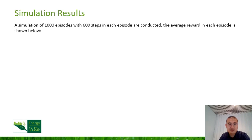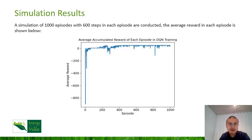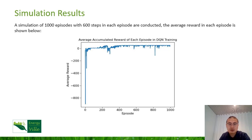A simulation of 1000 episodes with 600 steps in each episode is conducted. The average reward in each episode is shown here. As you can see, the average reward during the training process is increasing. At the beginning, the average reward is negative due to the penalty factor. After training, the agent learns how to avoid the penalty and reach the state that has the maximum reward. Because randomly sampled data are introduced to train, and the negative reward value is relatively large because of the penalty, the curve is not smooth, and it has some random negative average reward in some episodes.